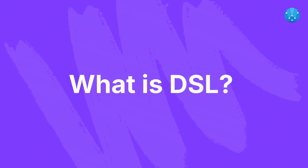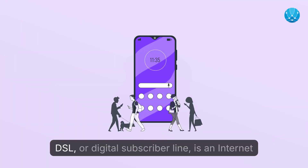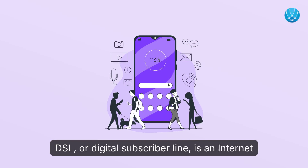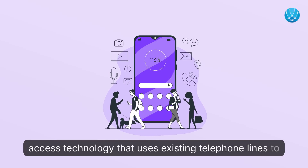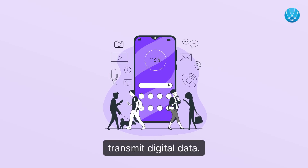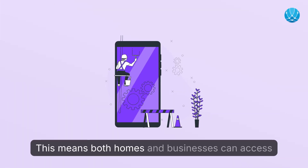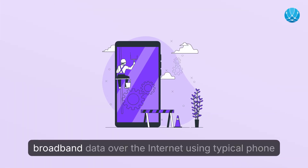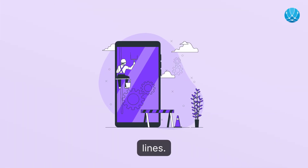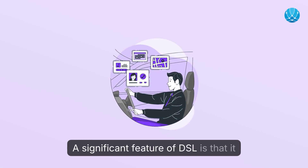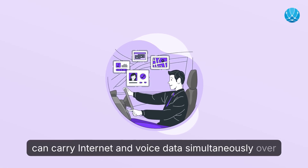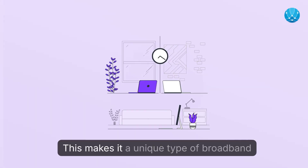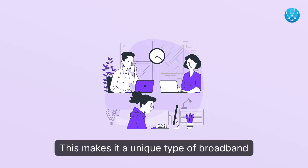DSL, or Digital Subscriber Line, is an internet access technology that uses existing telephone lines to transmit digital data. This means both homes and businesses can access broadband data over the internet using typical phone lines. A significant feature of DSL is that it can carry internet and voice data simultaneously over the same line, making it a unique type of broadband internet.